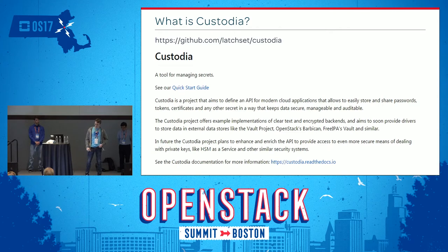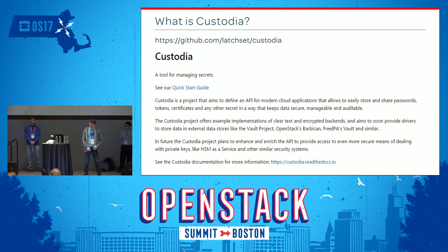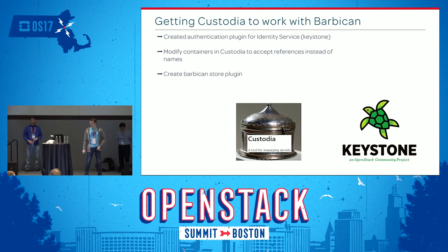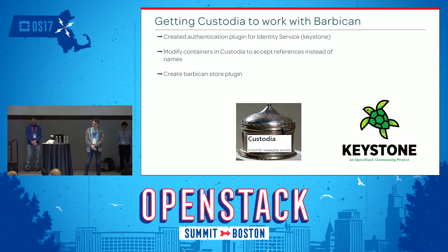What Custodia offers and actively advertises is the ability to create your own plugins and use something other than Custodia itself — like Barbican or even Vault. When we tackled this problem, Custodia did not support a Barbican backend, so that was one of the things we had to overcome. The main issue was getting it to work with Barbican, since Custodia is not an OpenStack project and has no idea what Keystone is. We had to allow Custodia to authenticate with Keystone. We also had to mock container references, since Barbican deals solely in container references whereas Custodia does not, and of course create the Barbican store plugin.